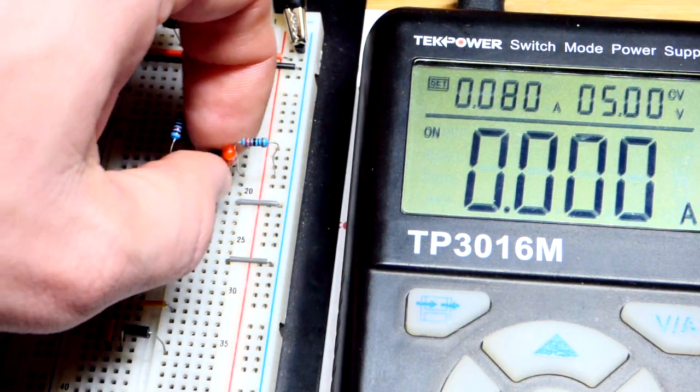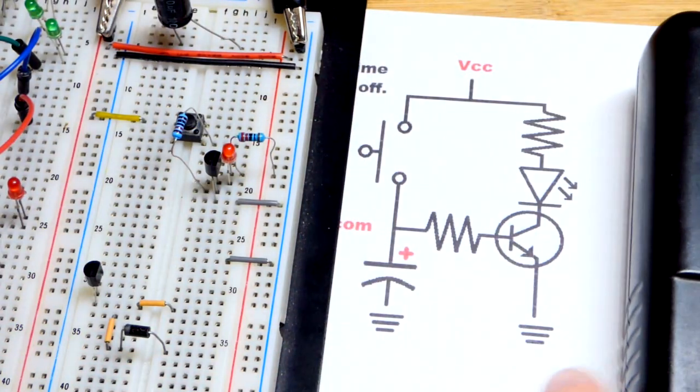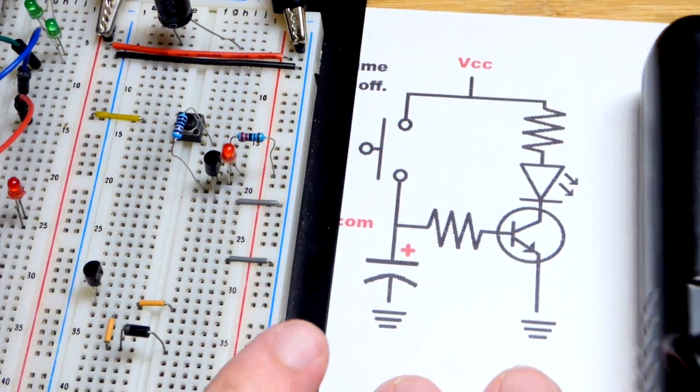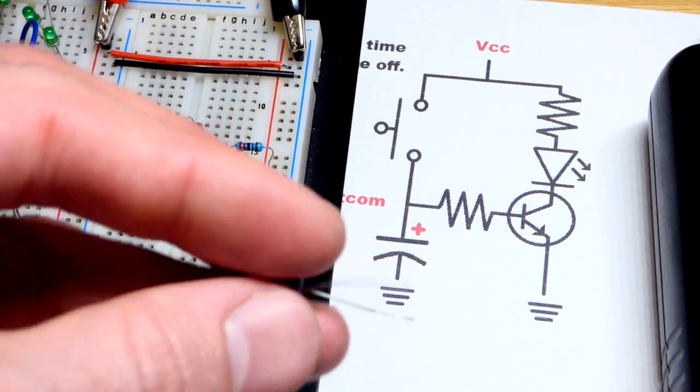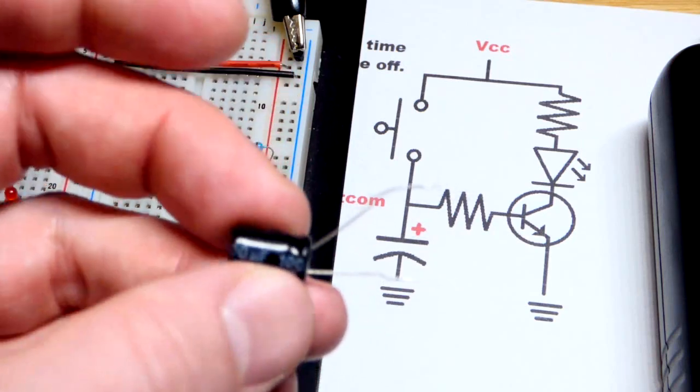So what we're going to do is just add that capacitor right there. That simple. That's the only modification. And so, we're going to use a 100 microfarad capacitor.